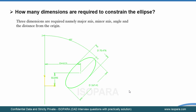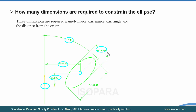The next question is: how many dimensions are required to constrain an ellipse? This is a tricky question. We need to consider the center of the ellipse — we have to provide X and Y values from the origin, which is two dimensions. Next, an angle is needed, and then the major axis and minor axis dimensions are required. So a total of five dimensions are required to fully constrain an ellipse in a sketch.